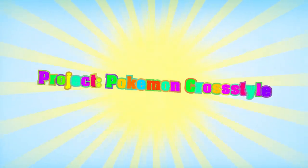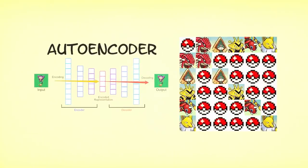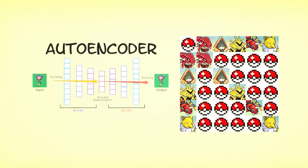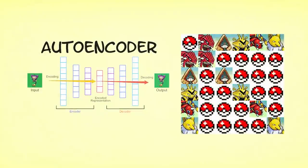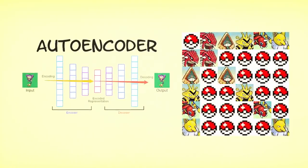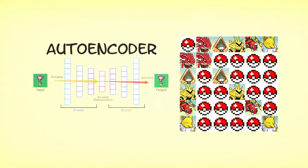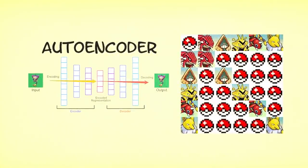This is the perfect application for an autoencoder. And I present to you Project Pokemon Cross Style — using an autoencoder and basic maths to blend a bunch of Pokemon together just to see what we get. I got to work immediately on this new idea. But then I realized, if we wanted to get to that point, there were some modifications and improvements that needed to be made.